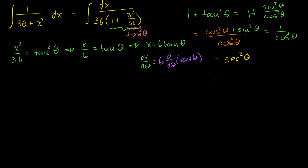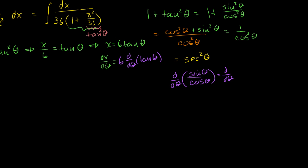The derivative of tangent of theta is the same thing as d/dθ of sine of theta over cosine of theta. I'll rewrite this as the derivative with respect to theta of sine of theta times cosine of theta to the minus 1 power — because I never remember the quotient rule.